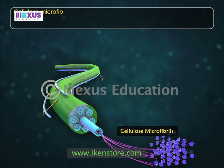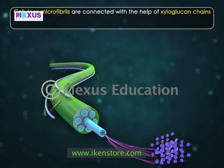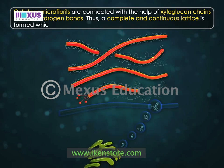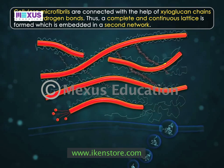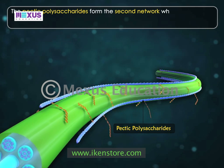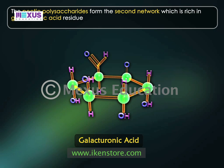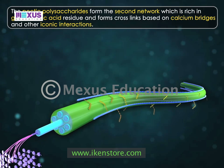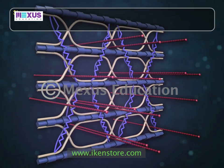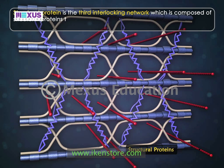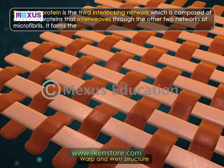Cellulose microfibrils are connected with the help of xyloglucan chains through hydrogen bonds, forming a complete and continuous lattice which is embedded in a second network. The pectin polysaccharides form the second network, which is rich in galacturonic acid residues and forms cross-links based on calcium bridges and other ionic interactions. Structural protein forms the third interlocking network, composed of structural proteins that interweave through the other two networks of microfibrils, forming a warp and weft structure.